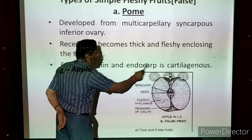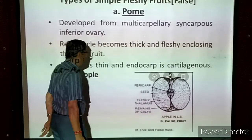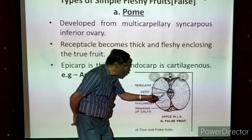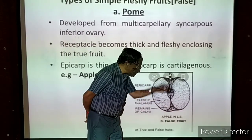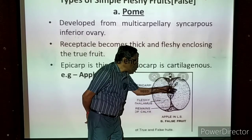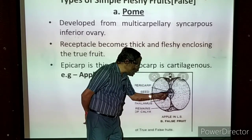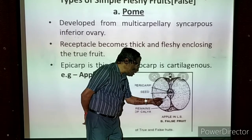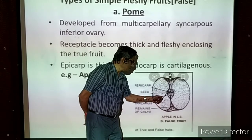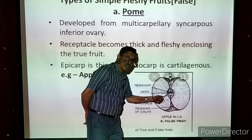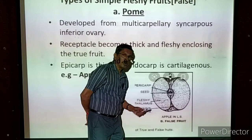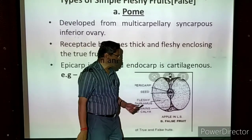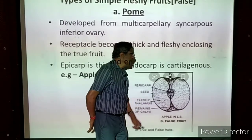In apple, the epicarp is thin. The endocarp is cartilaginous. Example: apple. Taking the section — the edible part is all we can access, but at the center one outer layer is present called the epicarp, and an endocarp with a smooth surface coating. There is no mesocarp here — only epicarp and endocarp are present.